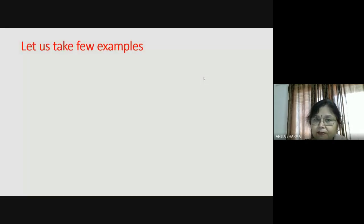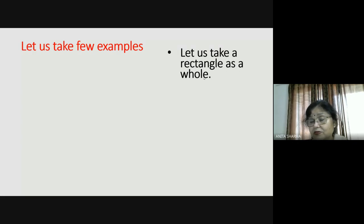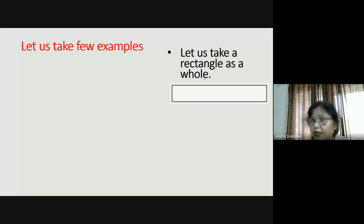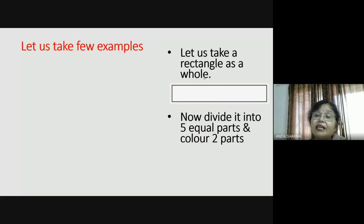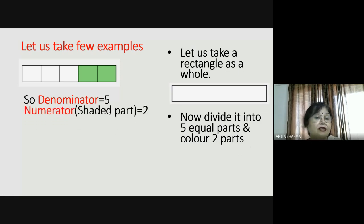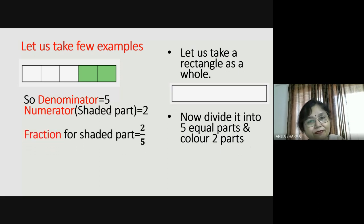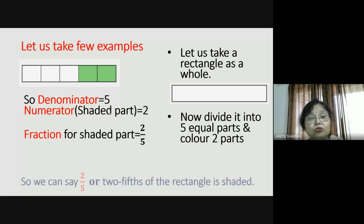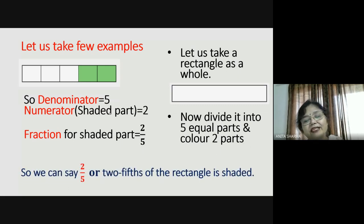Let us take a few examples. Let us take a rectangle — geometrical shapes are very easy to understand. This whole rectangle is the whole. Divide it into five equal parts and color two. So it will look like this — five parts and two are shaded. Denominator is five because it is divided into five parts. I am considering how many parts are shaded, that is two — so the numerator is two. The fraction for the shaded part is two by five. We can say that two-fifths of the rectangle is shaded.